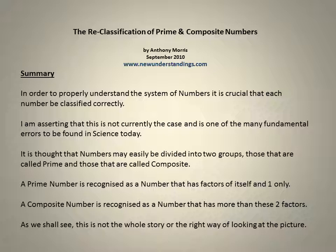It is thought that numbers may be easily divided into two groups, those that are called prime and those that are called composite. A prime number is recognised as a number that has factors of itself and one only. A composite number is recognised as a number that has more than these two factors. As we shall see, this is not the whole story or the right way of looking at the picture.